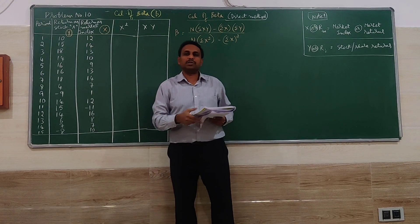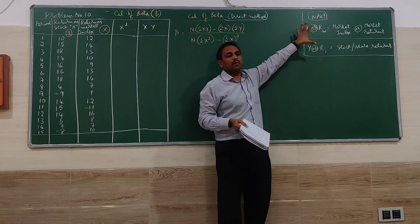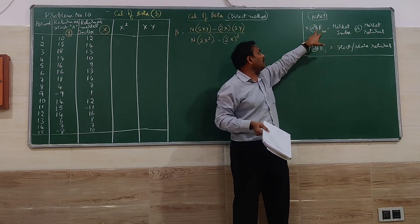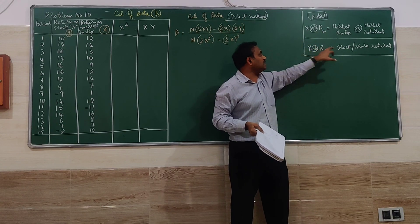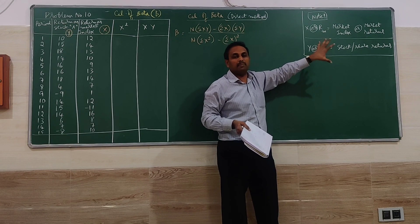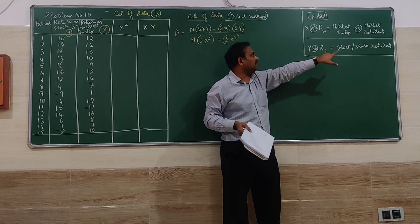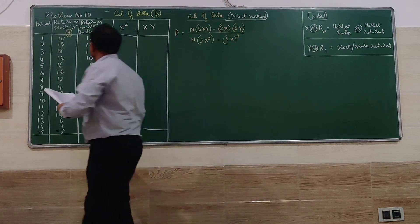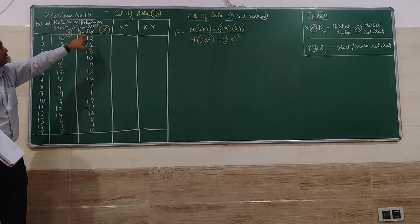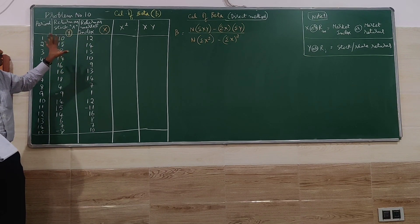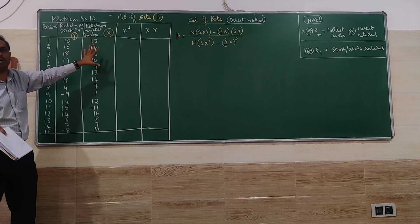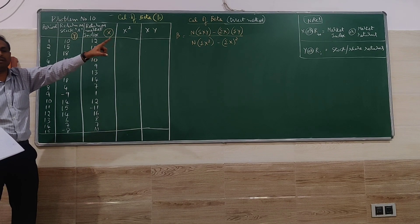In this problem, how to identify X and Y is the important question. Please take note: X is nothing but market index, or we call it market return — another name for that is RM, return of market. Y is nothing but stock or share return, another name for Y is RI, return on that particular share. M represents market, I represents the particular share. Stock A is Y and market index is X. Identifying X and Y correctly is the most important step — if you identify wrongly, your answer will be wrong.